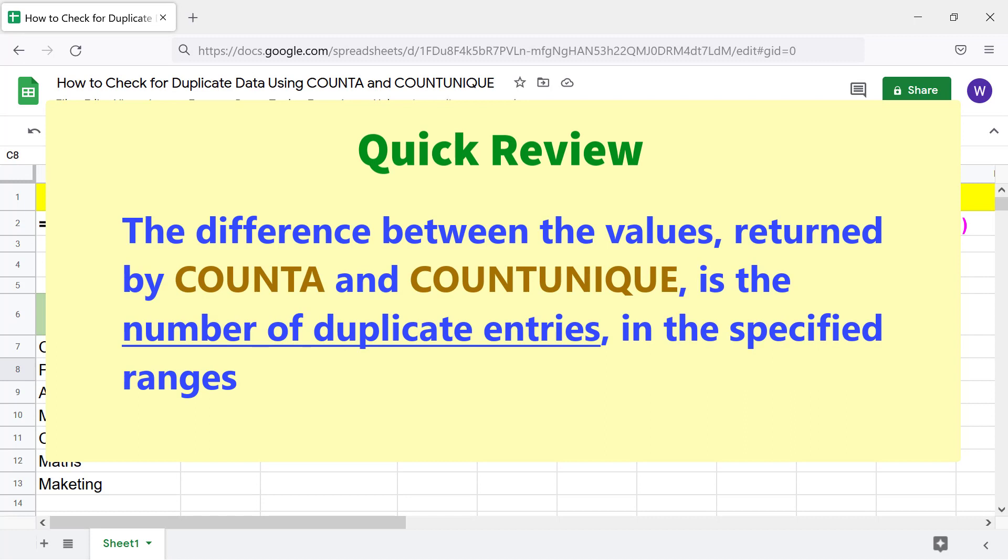The difference between the values returned by COUNTA and COUNTUNIQUE is the number of duplicate entries in the specified ranges.